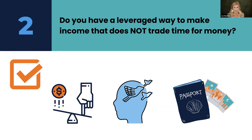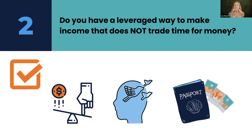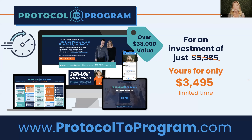Once you have leverage with online group programs, that gives you a lot of freedom. We took our son Maverick and lived in Thailand for three months — we could not have done that without a way of making income in the online space. You can create group programs or offer products — supplements, tinctures, herbs, patches — as great ways to have leveraged sales.